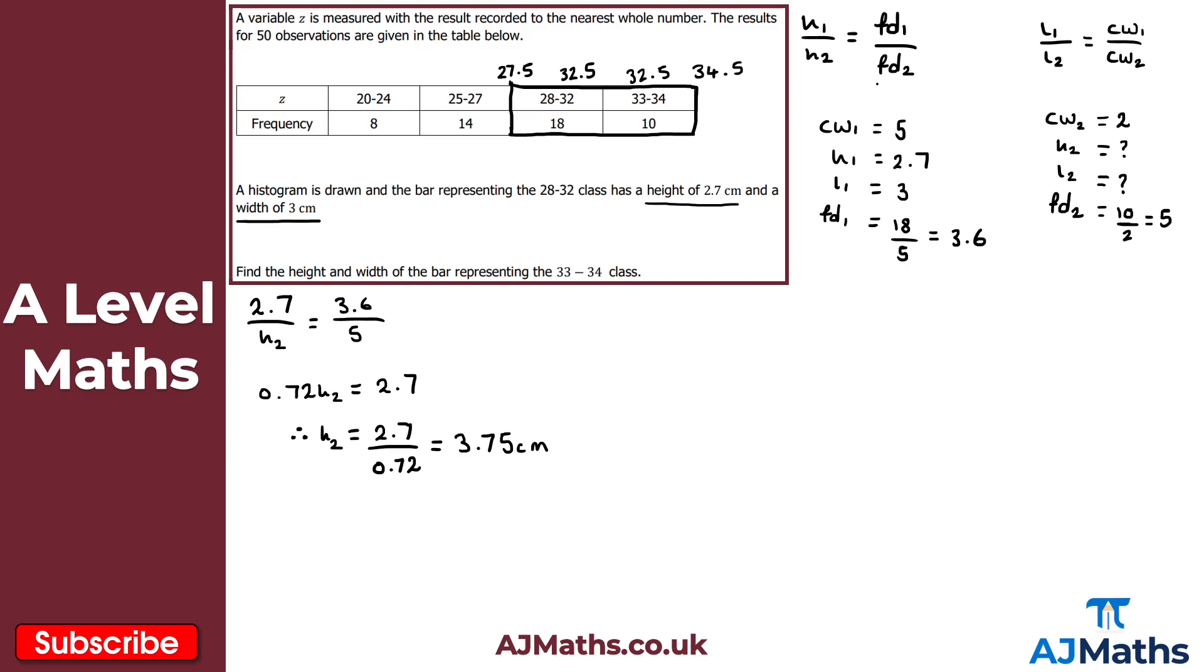So that's this equation sorted. We're going to need to do the same here with the second equation. We've got L1 over L2. So L1 is 3. L2, which again, we don't know. We're going to solve to find that in a moment. So 3 divided by L2 is equal to CW1, which is 5, divided by CW2, which is 2. So we've got 5 over 2 there.